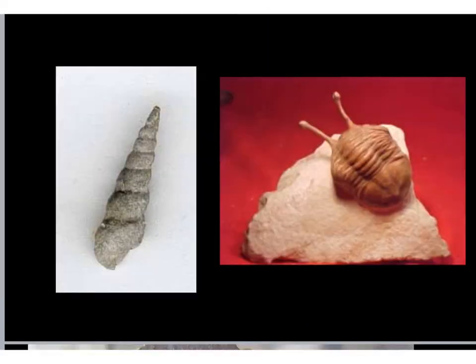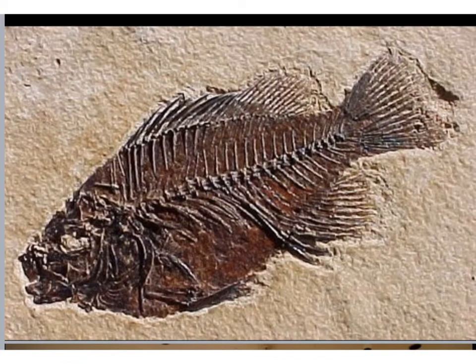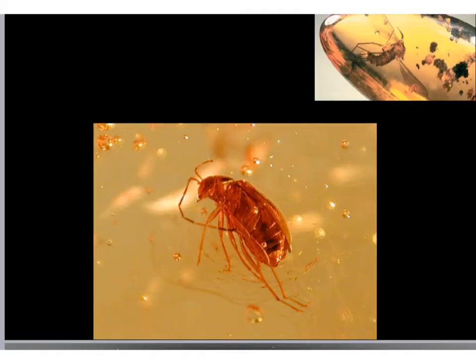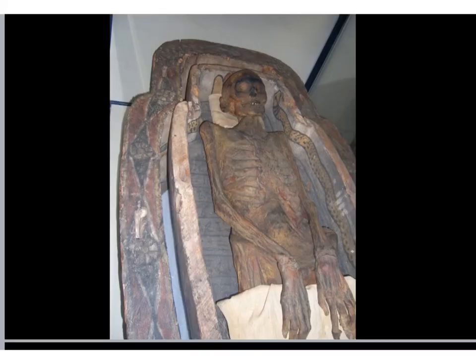Trace — footprints. These two are molds and casts: there's another trilobite and a seashell that's had the process happen to it. A 2D photograph of some leaves — trace. A 2D photograph of a fish — trace. Amber. This one might be tougher: it has two parts — the impression part and a part filled in three-dimensionally. This is a mold and cast: this side is the mold, this side is the cast. And our final fossil: the skin, bone, and all that is still there — this is original material, that's what the person was made of.